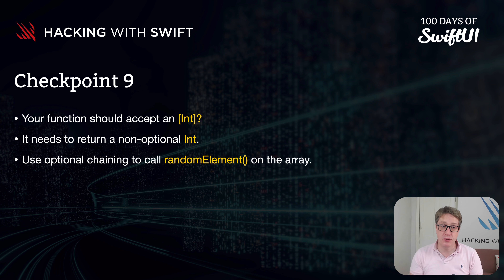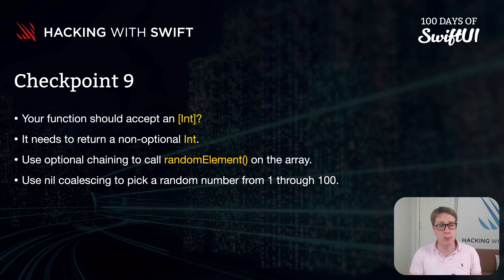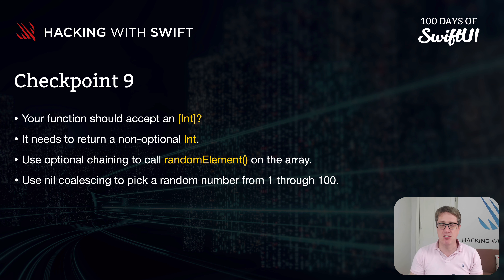Use optional chaining to call randomElement() on the array — remember, one line of code. And because you've got to return a non-optional integer, use nil coalescing to pick a random number in the range of 1 through 100 if the int array is not there or if randomElement() returns nothing at all.